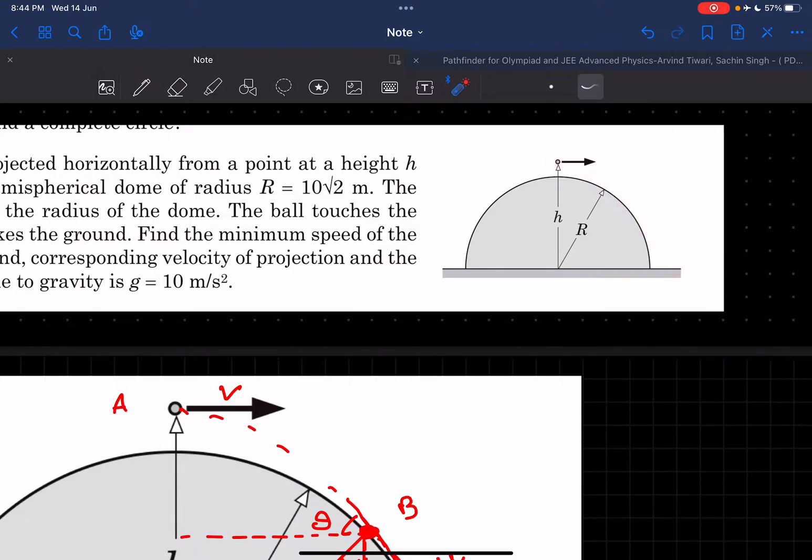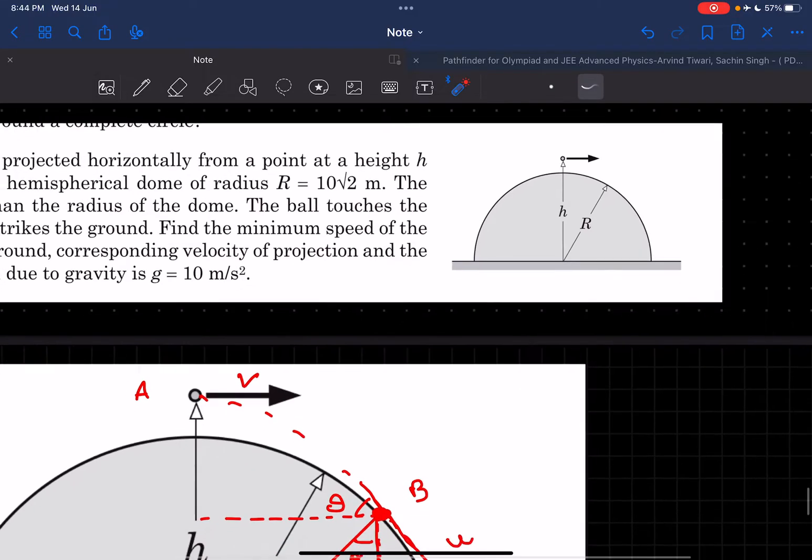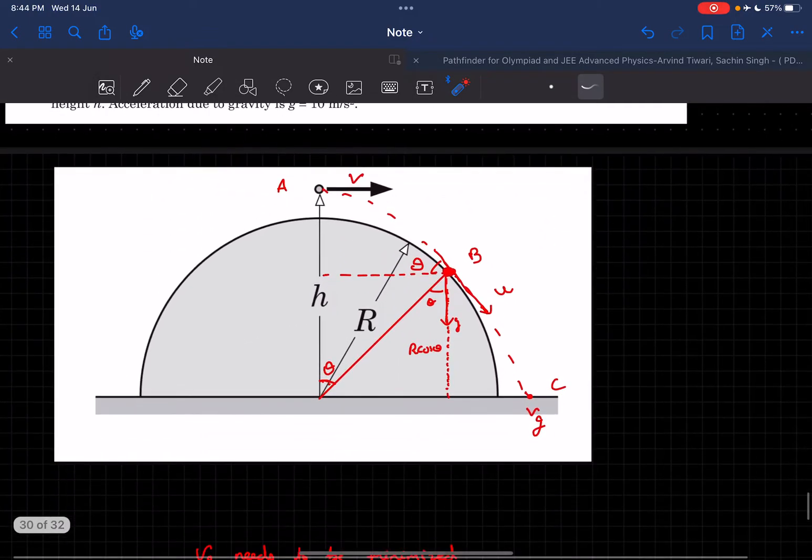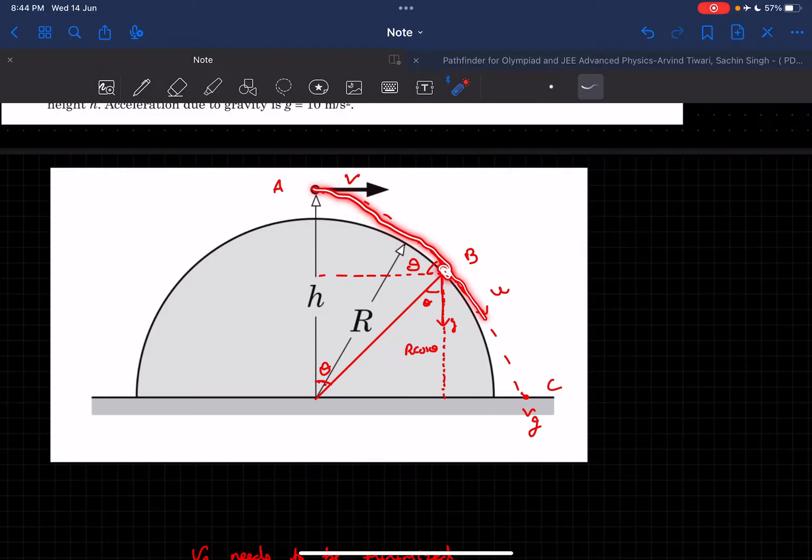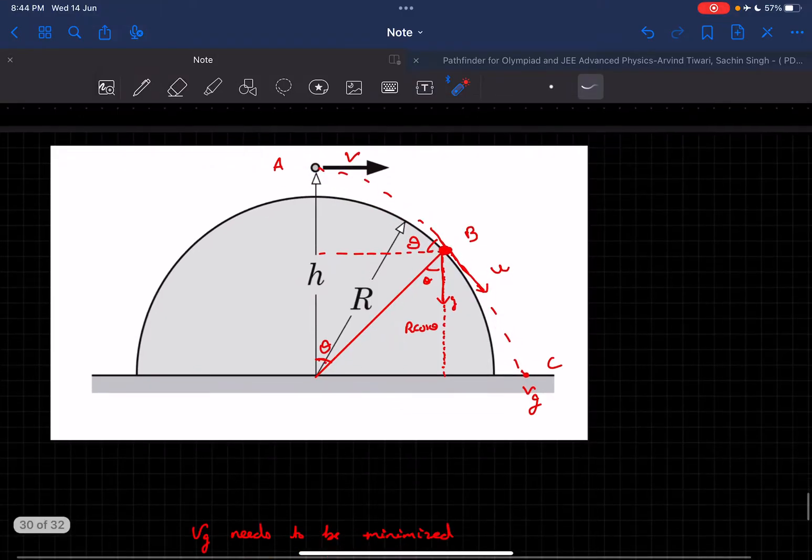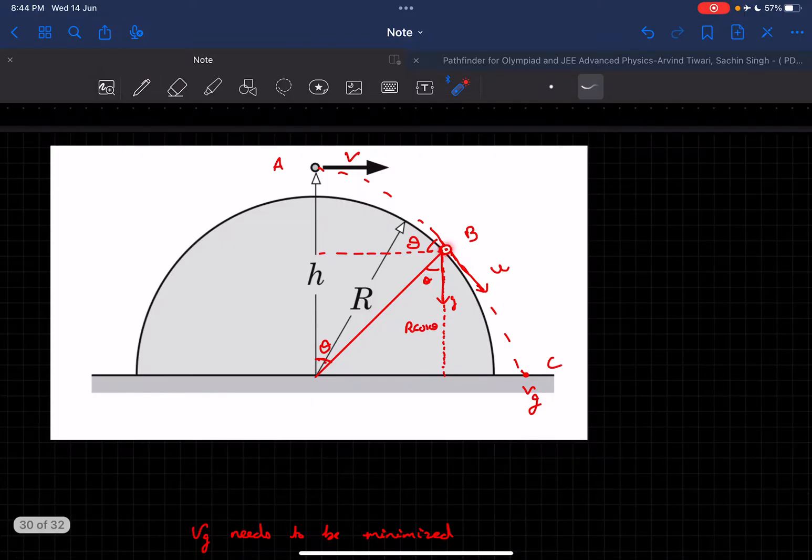We need to find the condition for which the velocity at the ground is minimum. The ball must touch the dome tangentially without colliding, then continue its path and hit the ground with velocity vg. Let's assume the velocity when it touches the dome is u and its angular position is theta.